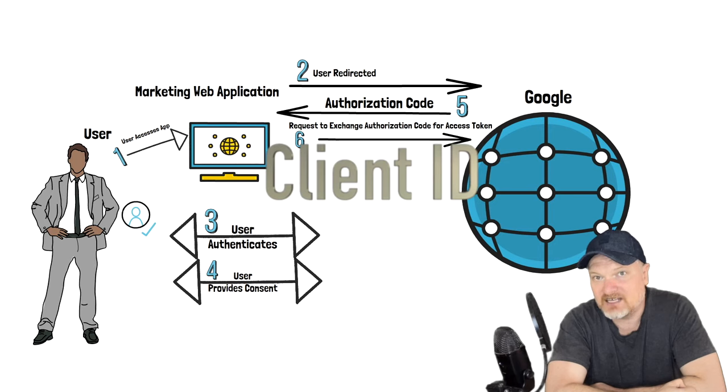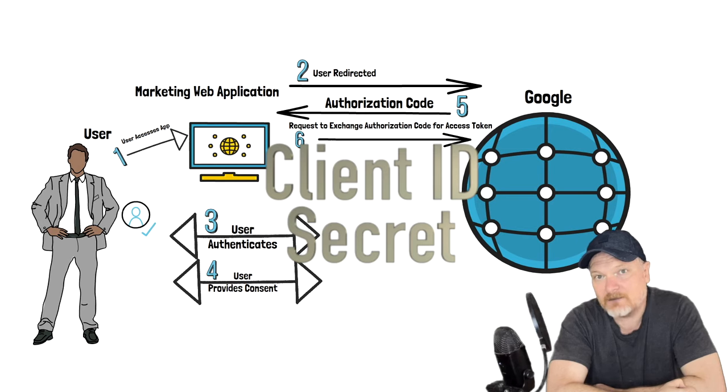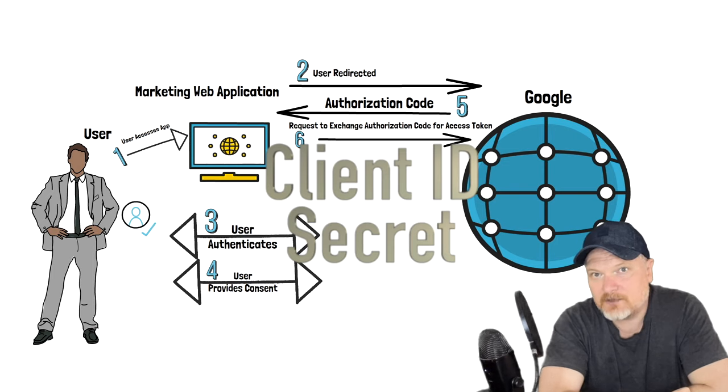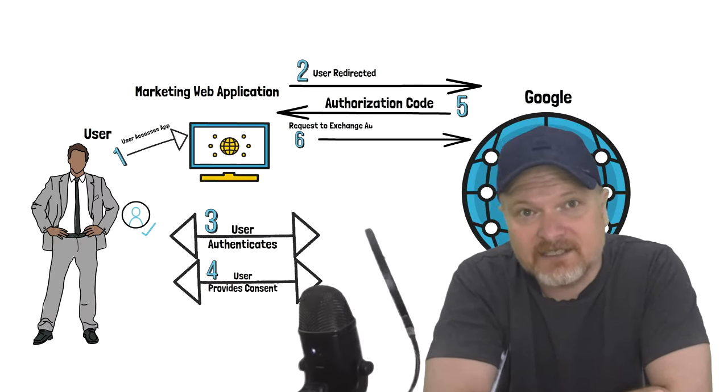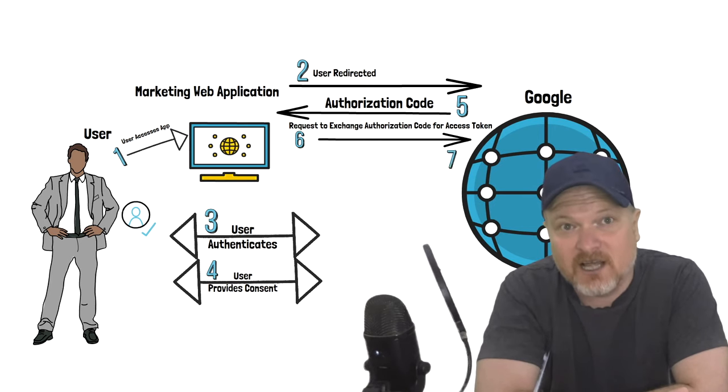At this stage in the authorization code flow, the marketing web application has received an authorization code. The client sends the authorization code via a back channel along with the client ID and secret issued by Google when the marketing web application was registered for OAuth. After a client is registered with the authorization server, it receives a client ID — which uniquely identifies the application — and a secret, analogous to a username and password.